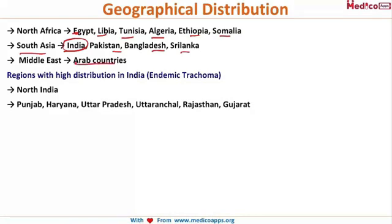Focusing on India, trachoma is very highly prevalent in North India, especially in Punjab, Haryana, Uttar Pradesh, Uttarakhand, Rajasthan and Gujarat. These states are highly affected by trachoma.